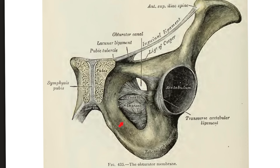The hip bone is made of three structures: the ilium, the ischium, and the pubis. The obturator foramen is mostly obliterated by the obturator membrane; this opening is known as the obturator canal. The obturator nerve passes through the canal, and while in the canal, the obturator nerve is going to divide into anterior and posterior divisions.